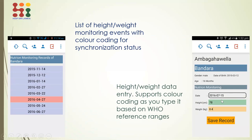One important interface is where the child's data is entered — for example, a child who is 16 months old with height and weight values entered. We wanted to give a visual indication to the field health worker about where that figure stands, because these are just numbers. The app verifies against WHO standard deviation values for height-for-age, weight-for-age, and so on, giving a color-coded visual indication.